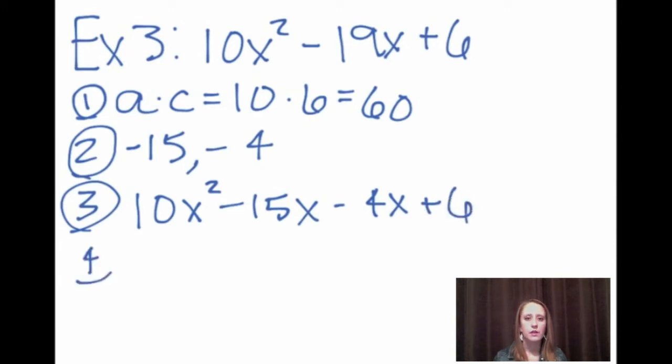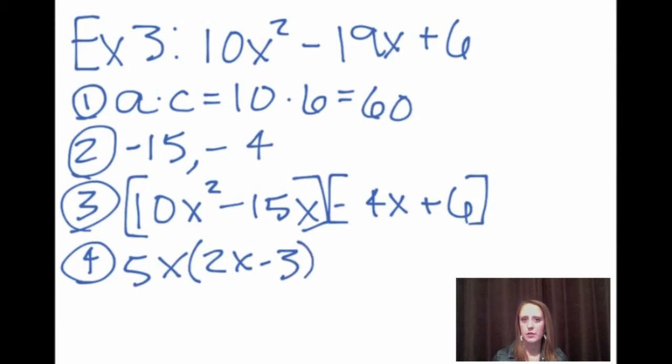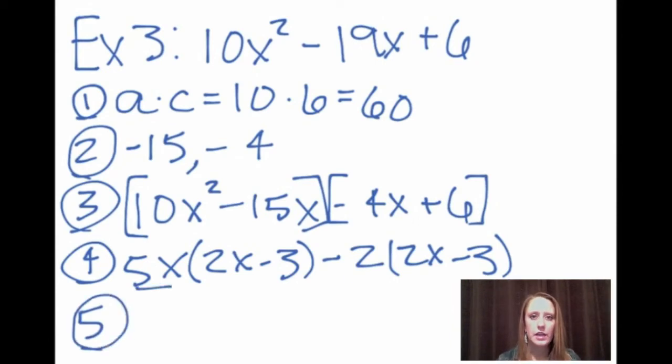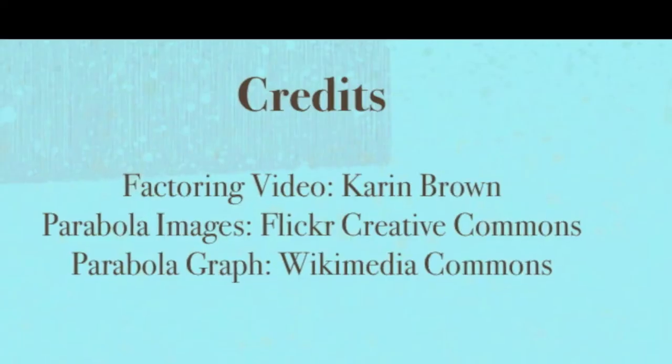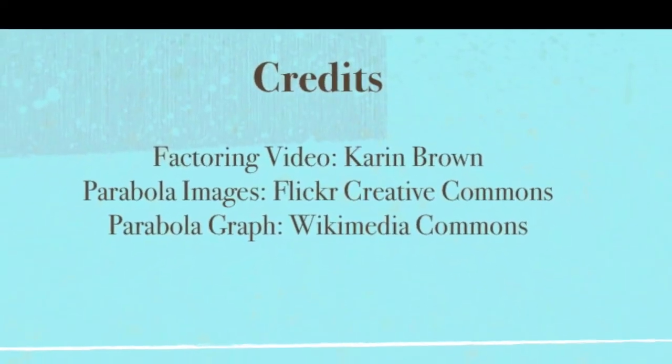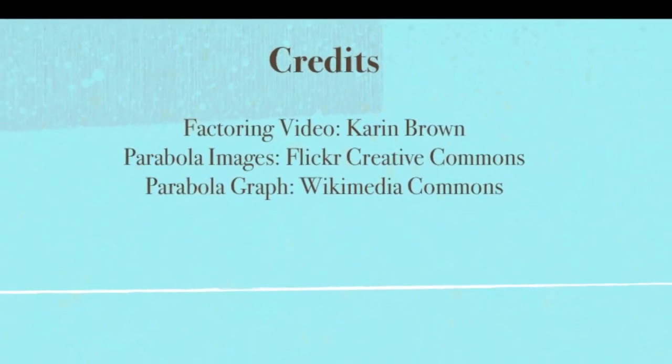In step four, we divide the greatest common factor out of the first two terms and the last two terms. The greatest common factor of 10x squared and 15x is 5x. And when we divide it out, we have 2x minus 3. The greatest common factor of negative 4x and 6 is negative 2, leaving us again with 2x minus 3. So in step five, we connect the two parts outside the parentheses together, which gives our first term to be 5x minus 2. And then we write 2x minus 3 afterwards to give us our final answer. This concludes my presentation on factoring using the AC split method. I hope you enjoyed it and thank you for watching.